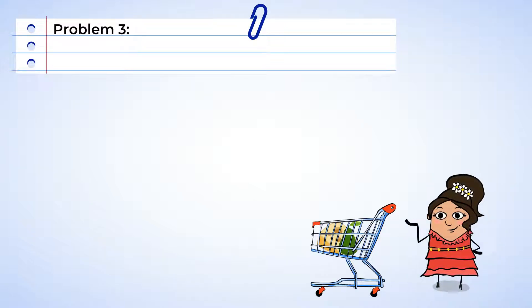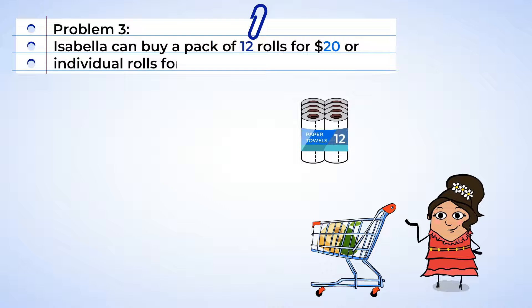Now the last item on Isabella's list is paper towels. She needs some help choosing paper towels. She can buy a pack of 12 rolls for $20 or individual rolls for $1.73 a piece. Which is a better deal? Well, I'm sure we can help her figure it out. Let's check how much it would cost to buy 12 rolls for $1.73 a piece. Then we'll compare it to the price of the 12 pack.